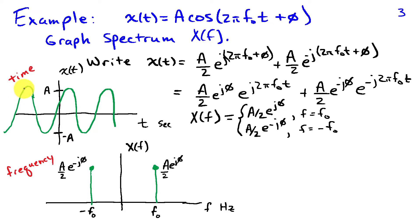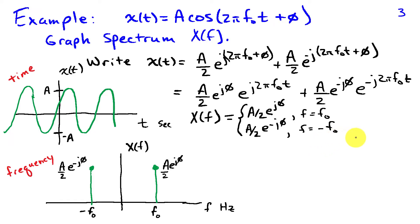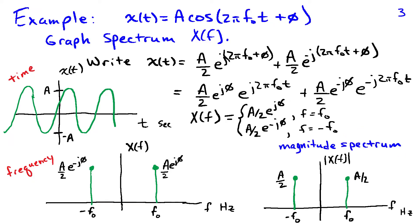I can graph the signal as a function of time — it has amplitude a, going between +a and −a, with a frequency and phase shift. But if I want to represent the frequencies present in this signal, I use the spectrum X(f). As a function of frequency, there are contributions only at f₀ and −f₀: at f₀ the amplitude is (a/2)·e^(jφ), and at −f₀ it is (a/2)·e^(−jφ). Often we're more interested in how energy is distributed with respect to frequency, so we define the magnitude spectrum, which plots the magnitude of these coefficients. Taking the magnitude removes the e^(±jφ) terms, so the magnitude spectrum is a/2 at both f₀ and −f₀.